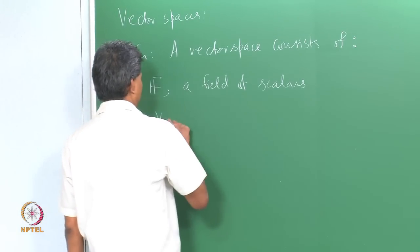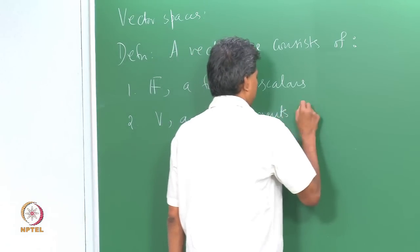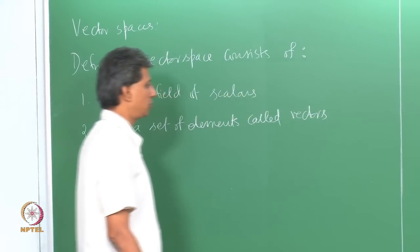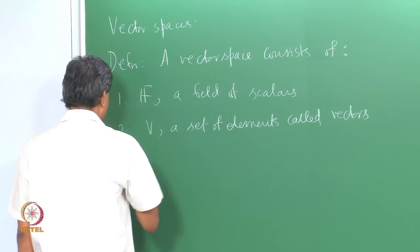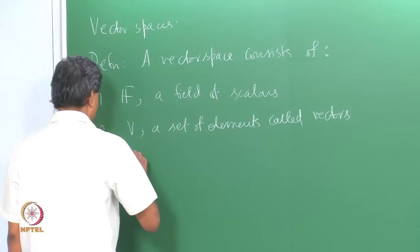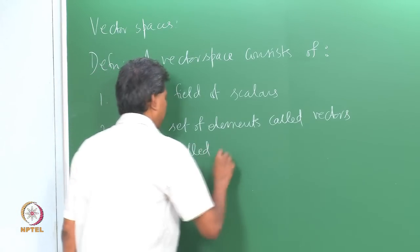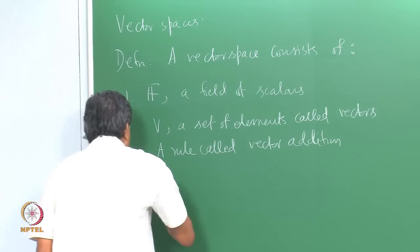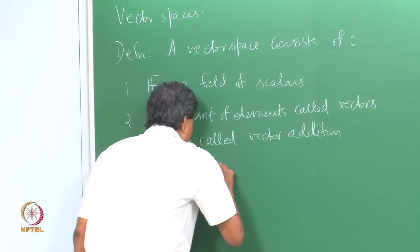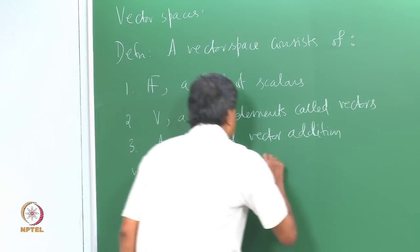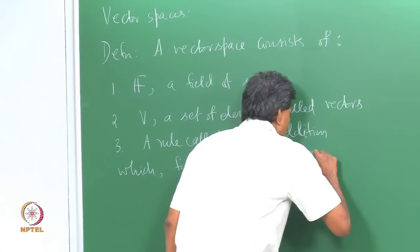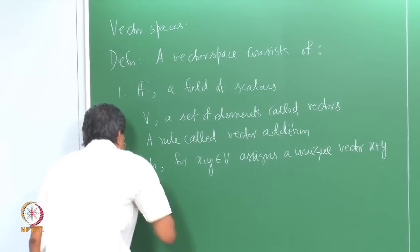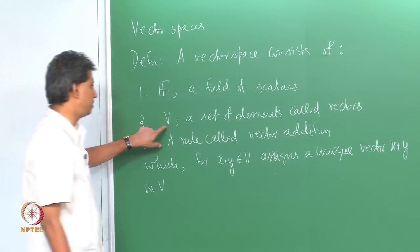Then we have V, a non-empty set of elements called vectors. The third aspect is a rule called vector addition — a binary operation which for x, y in V assigns a unique vector x + y also in V. So there is a binary operation on V called vector addition.